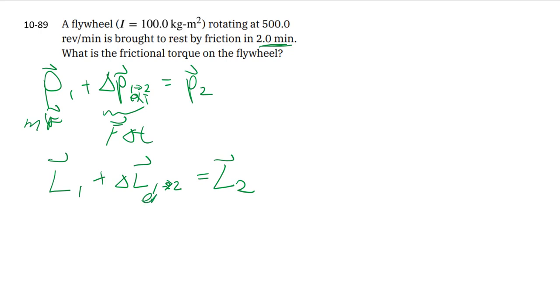The initial bit plus the change, which is the angular impulse due to external torque in this case, would give you the final angular momentum. The impulse, instead of F times Δt, will be torque times Δt. So we're dealing with torque here about some axis.